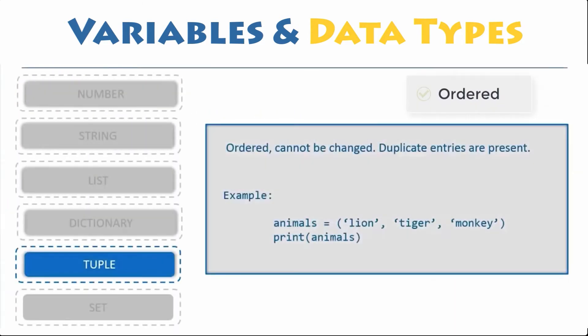Tuples. Tuple is an ordered collection of Python objects, much like a list. The sequence of values stored in a tuple can be of any type and they are indexed by integers, which allows duplicate members.